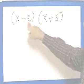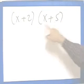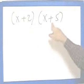They're called binomials because each one has two terms, first, second, first, second.